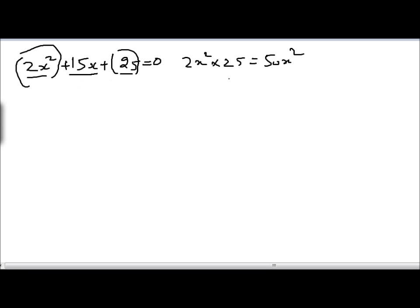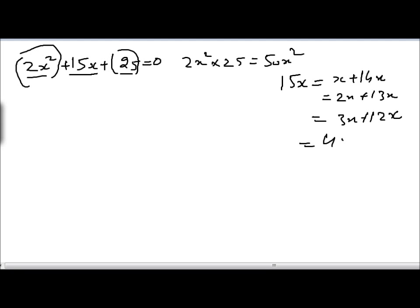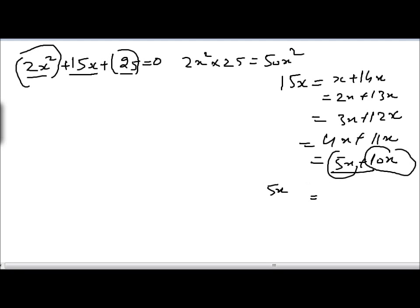Now let's try the different combinations in which we can split 15x. We can split it into x plus 14x, or 2x plus 13x, or 3x plus 12x, or 4x plus 11x, or 5x plus 10x. We stop here because the product of 5x and 10x is 50x squared, which is exactly what we want.